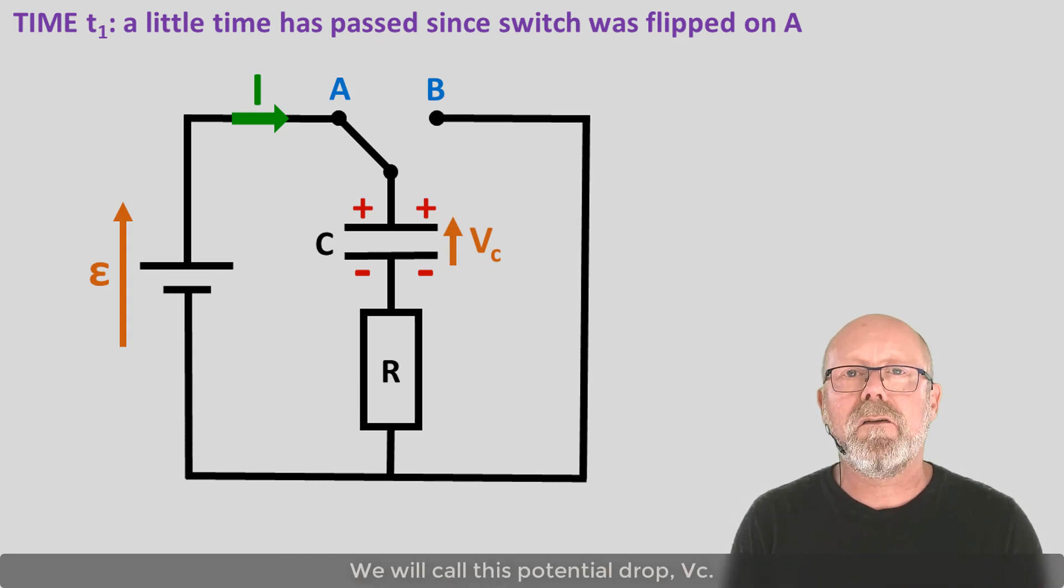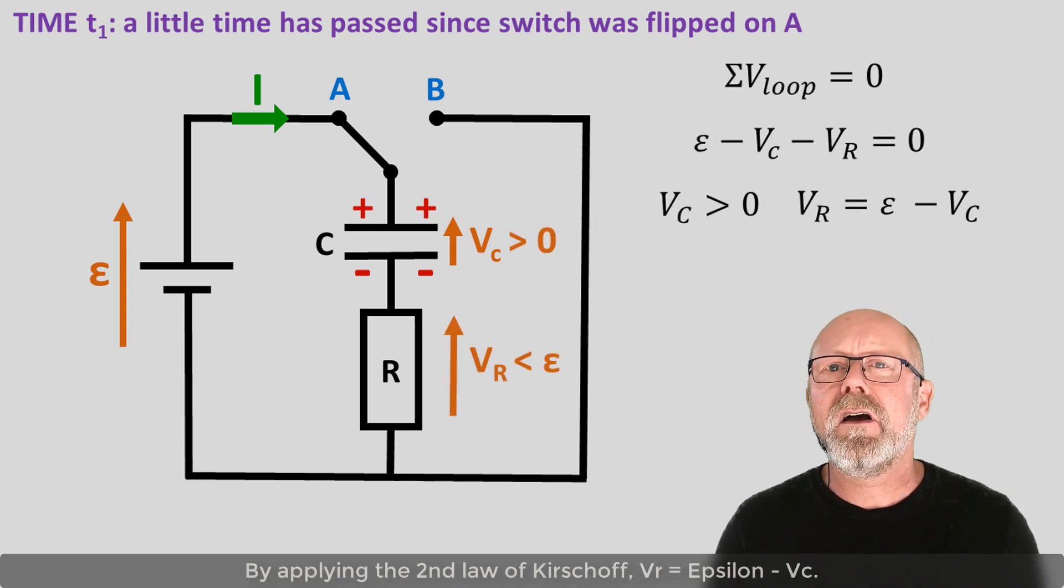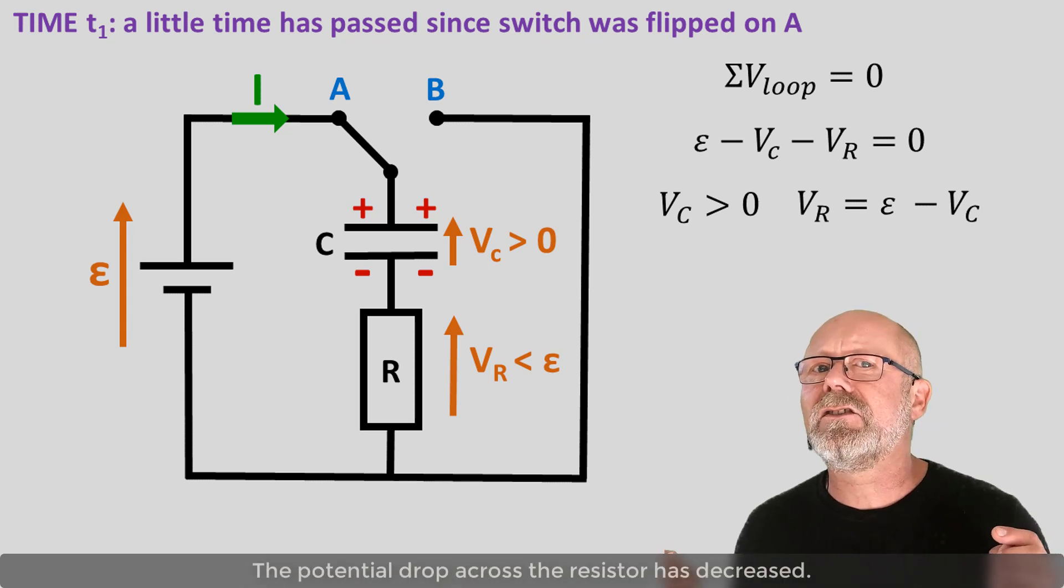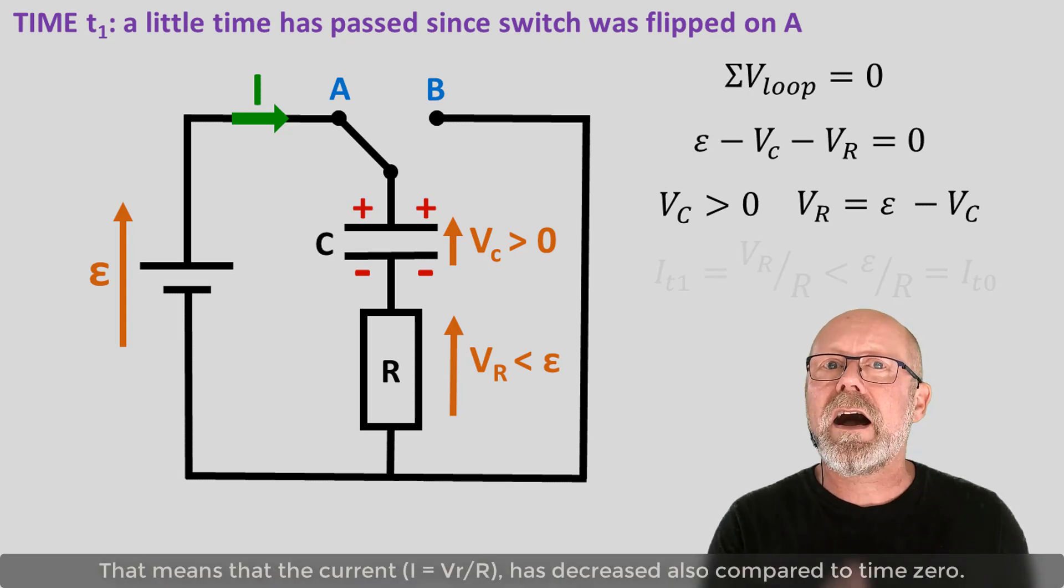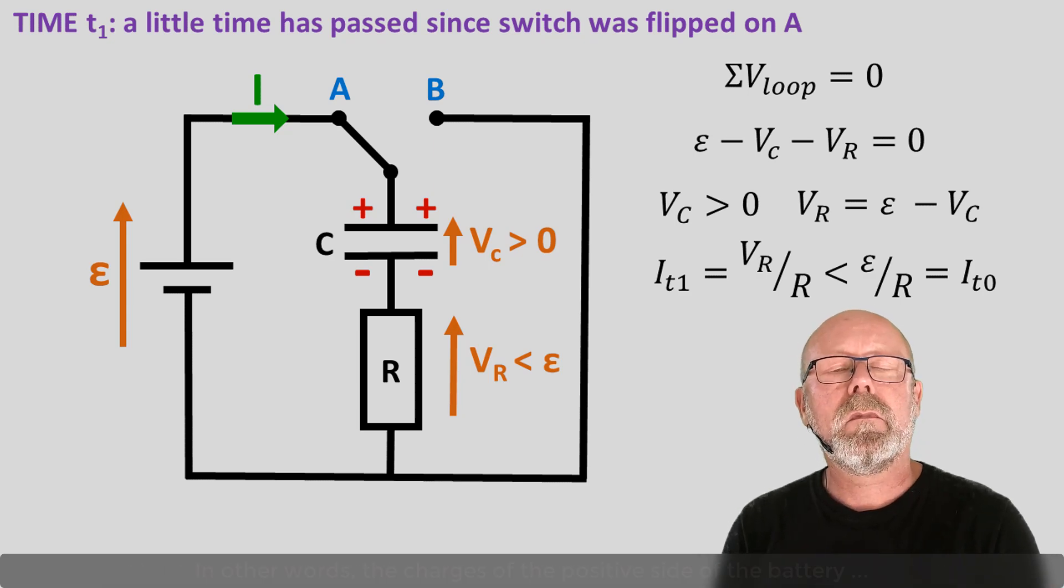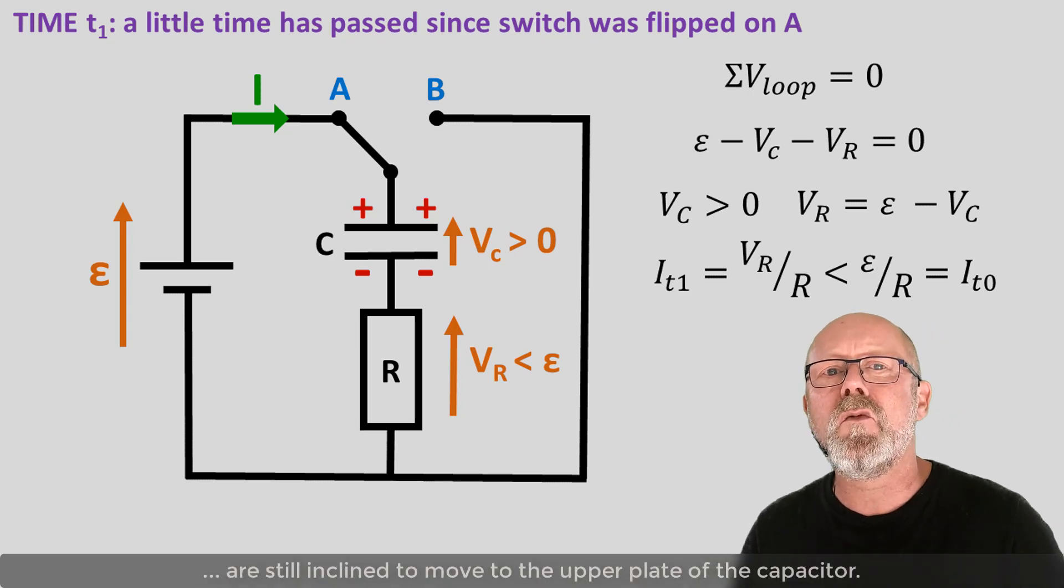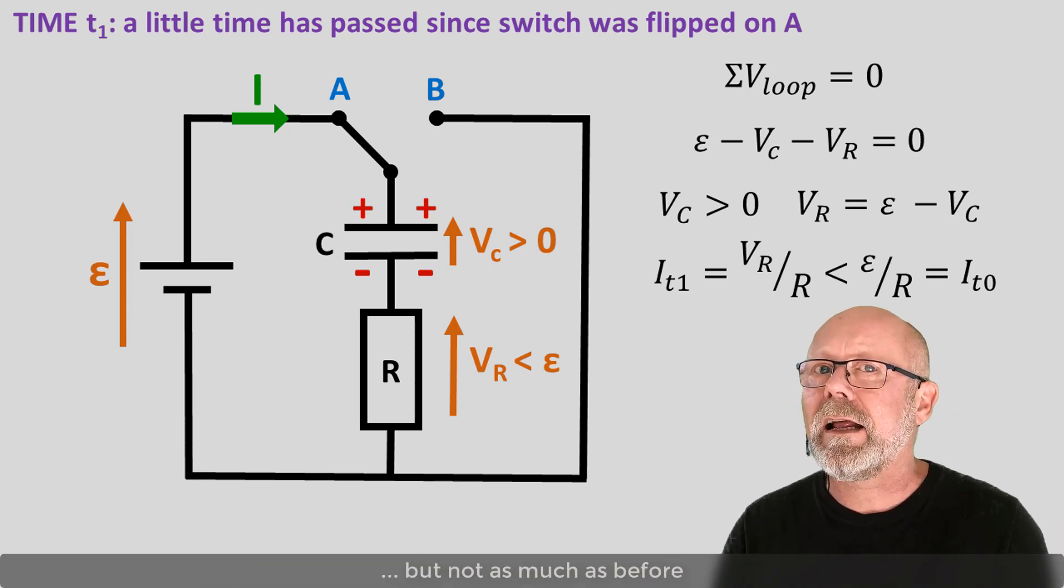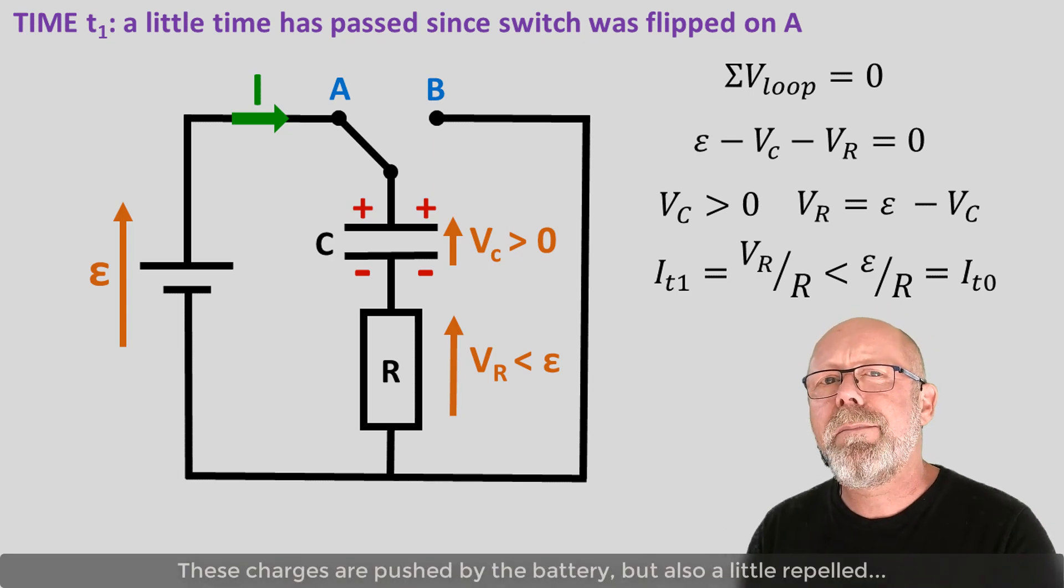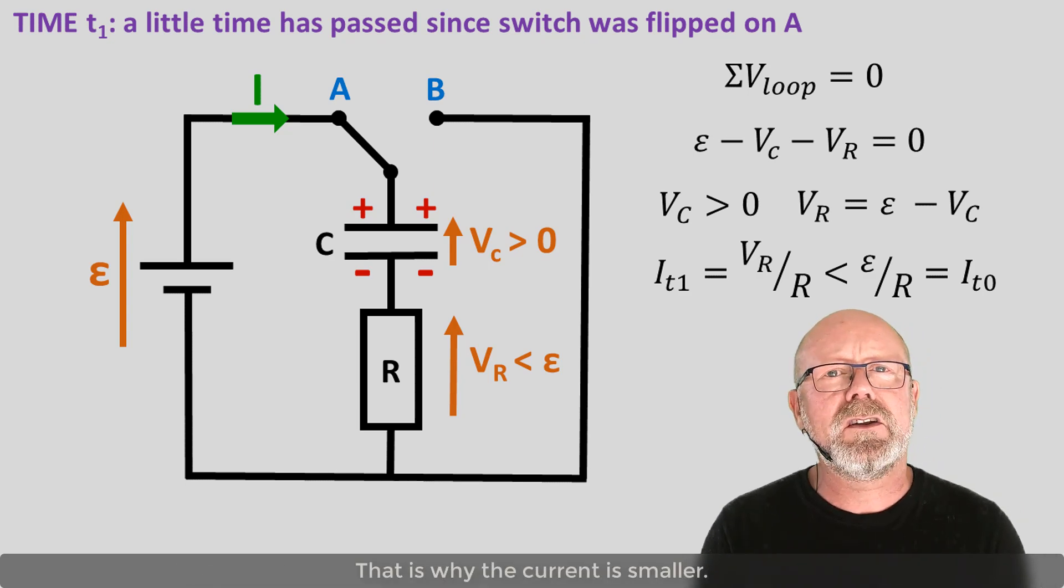We will call this potential drop Vc. Vc is not zero anymore. By applying the second law of Kirchhoff, Vr is equal to epsilon minus Vc. The potential drop across the resistor has decreased. That means that the current, I equals Vr over R, has decreased also compared to time zero. In other words, the charges on the positive side of the battery are still inclined to move to the upper plate of the capacitor, but not as much as before. These charges are pushed by the battery, but also a little repelled by the charges already present on the capacitor's upper plate. That is why the current is smaller.